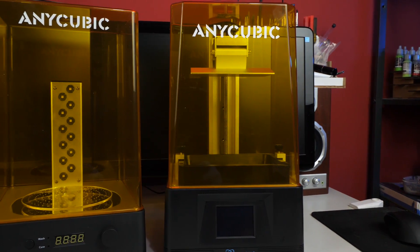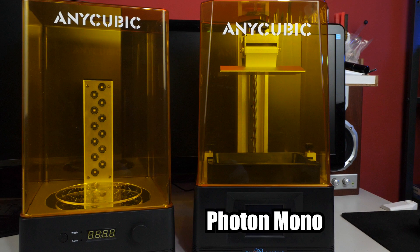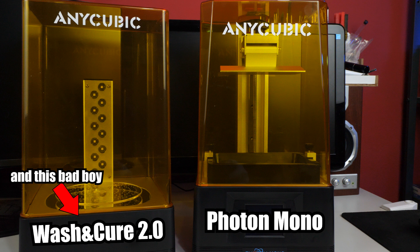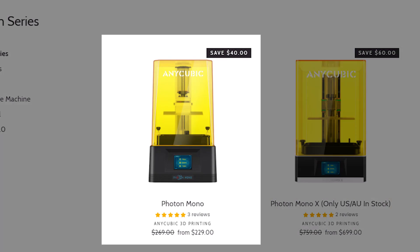What I got from Anycubic is their Photon Mono resin printer, and when you visit their website, it currently costs around 229 dollars, which is a very similar price tag to Ender 3 when I got it. Now I did not use this 3D printer just yet because I wanted to go through the whole process from unboxing to my ready-to-be-painted miniature with you guys. So let's do this.